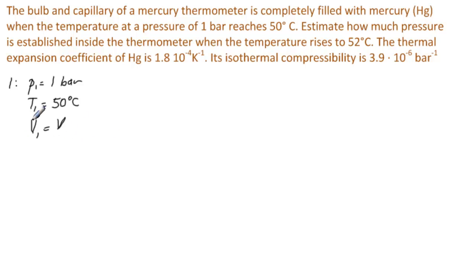Why do we write this down? The key part is that it's completely filled at 50, and so the same volume is present at 52 degrees. So that's why we write V1 equal to V, because on level 2 we have P2 equals what we're looking for, we have T2 equals 52 degrees Celsius, and we have V2 equals the same V. So this is the same. That makes delta V equal to 0.